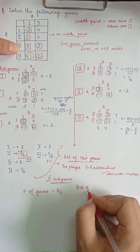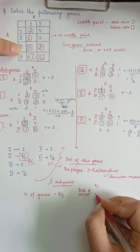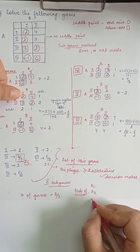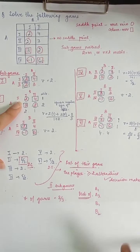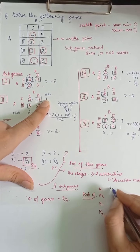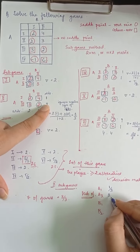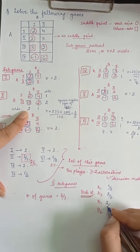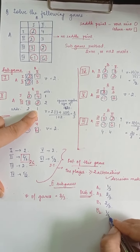The next step is to calculate the probabilities for A1, A3, B1, and B2. Probability of A1 = its corresponding odd (1) upon the sum of odds (3). Probability of A3 = 2 upon the sum of odds (3). Probability of B1 = 2 upon the sum of odds, and probability of B2 = its odd upon the sum of odds.